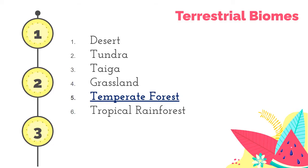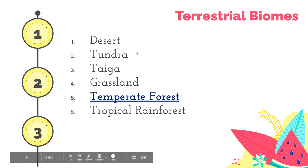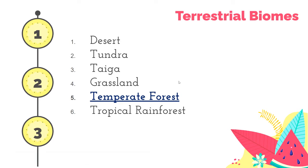In the previous videos, we have talked about the other terrestrial biomes such as desert, tundra, taiga, grassland, and savannah. In this video, we will talk about the last two types of terrestrial biomes which happen to be forests, specifically the temperate forest and the tropical rainforest.